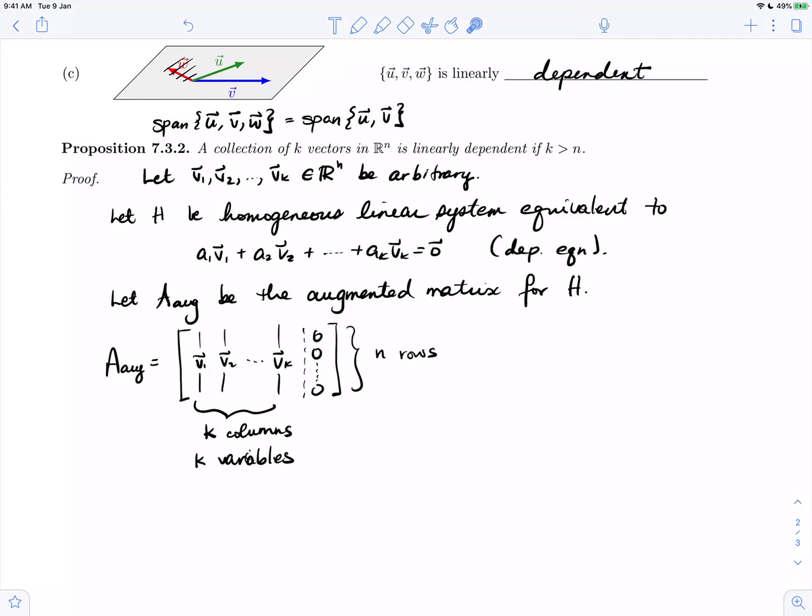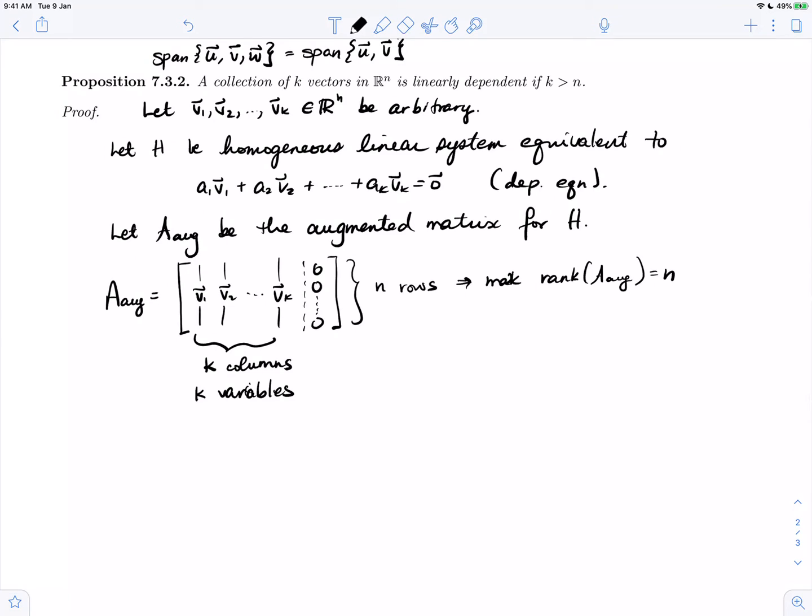The n rows tell us that the maximum rank of A_aug is n. So, since H is homogeneous, it is consistent.